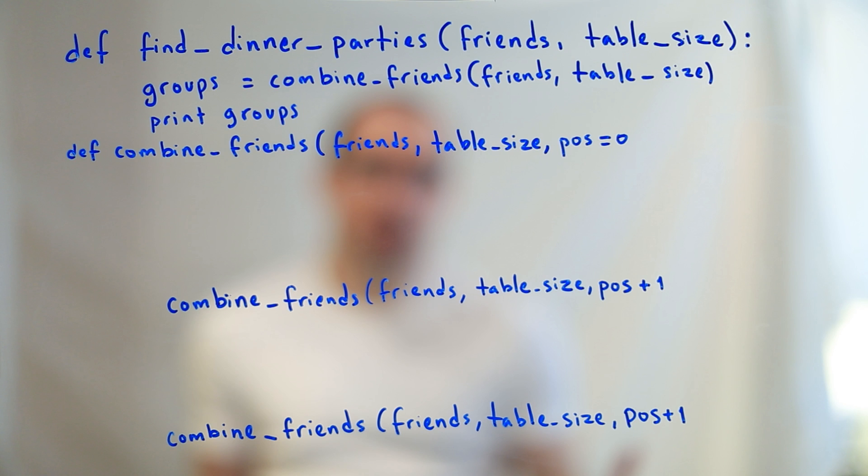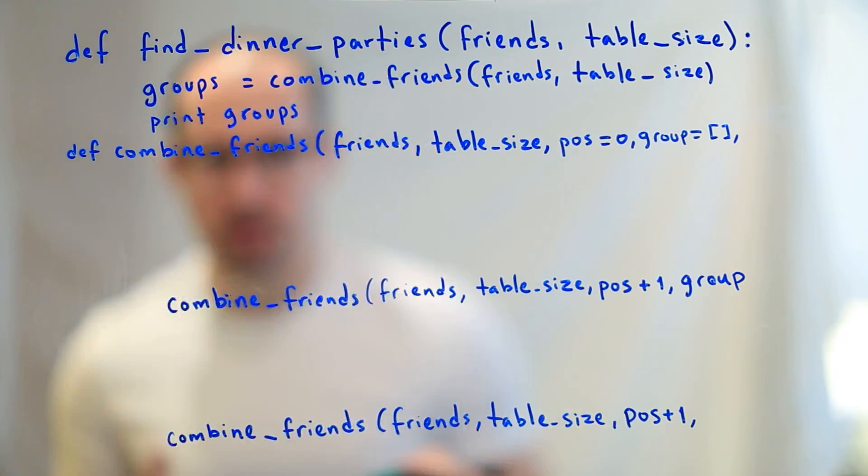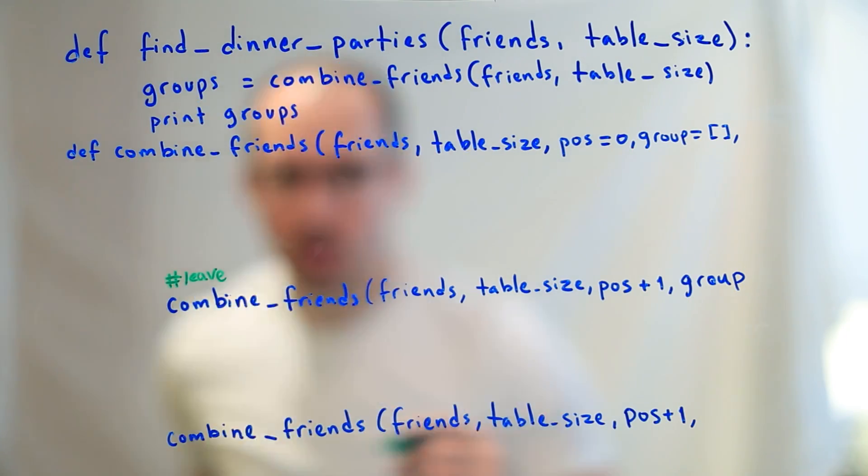So if you assume we have a list one, two, three, four, we're going to recurse once, skipping one entirely. And we're going to recurse once, including one as the first number in our combination. To do that, we need something to store our intermediate set in. I'm just going to create a list called group, and I'm going to use that in both recursive functions.